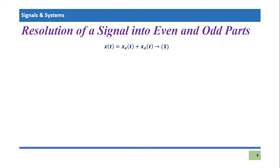and o(t). That means it has an even part available within it and it also has an odd part available. So this is the generalized equation and we need to calculate the exact equations. To proceed further, because we know that in the evaluation of